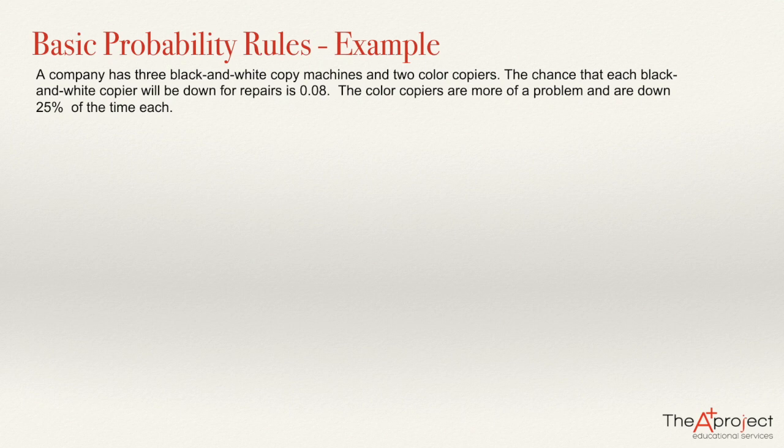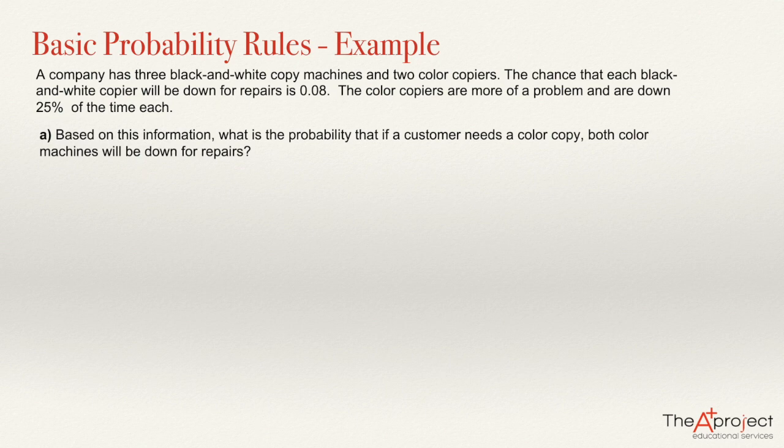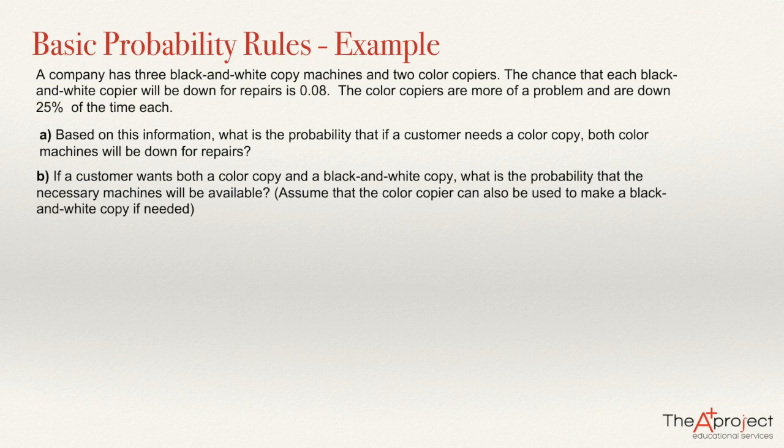With this information, we need to answer these questions. What is the probability that if a customer needs a color copy, both color machines will be down for repairs? If a customer wants both a color copy and a black and white copy, what is the probability that the necessary machines will be available? Assume that the color copier can also be used to make a black and white copy if needed.